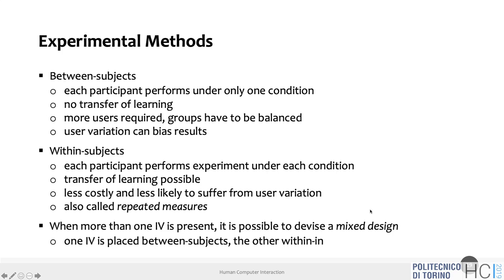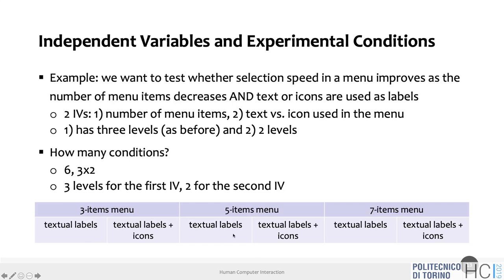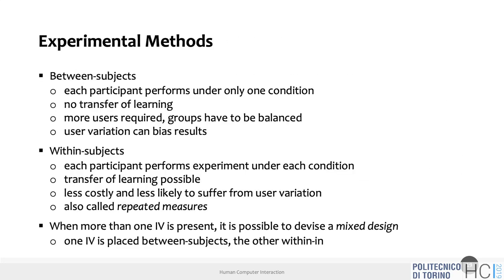In within-subject, each participant performs the experiment under all conditions — one person does all six conditions one after another. Advantages: less costly, fewer people needed, less likely to suffer from user variation. Disadvantage: transfer of learning is possible. For example, when a person reaches the textual-plus-icon condition they already know what to expect from having done the textual label condition. This is also called repeated measures, because you repeat the same experiment for the same person.